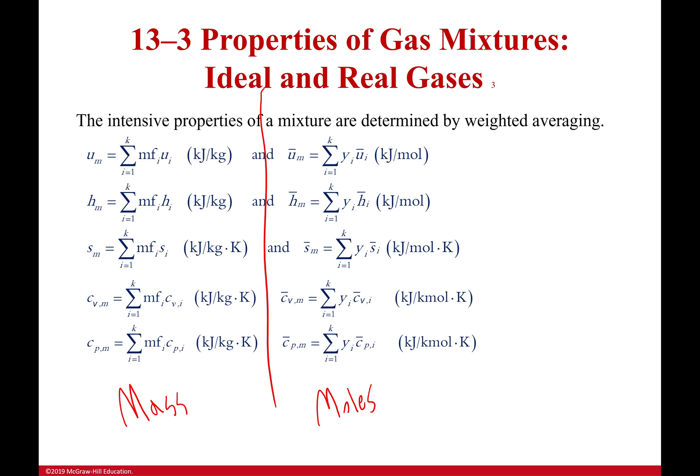Mass on one side, moles on the other. So what am I seeing? Well it's just based on fractions. So I have mass fraction here, I have mole fraction here. I have per unit mass for a particular component here. I have per unit mole for a particular component here. And that's all I'm doing.